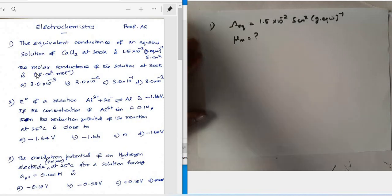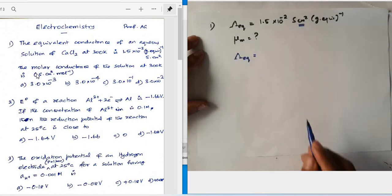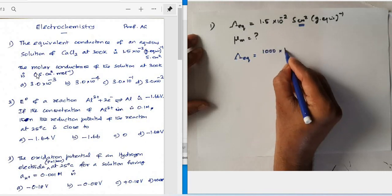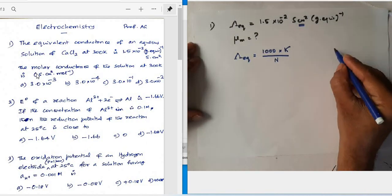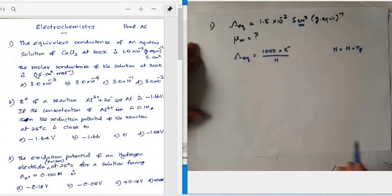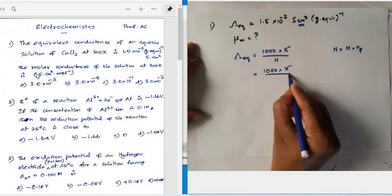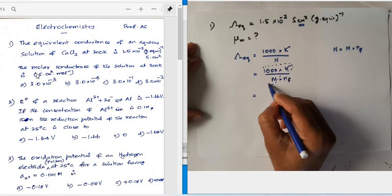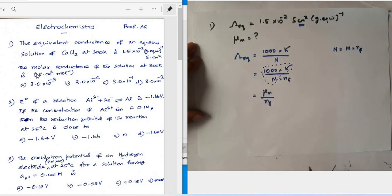To identify the molar conductance, we use the formula: equivalent conductance equals 1000 × kappa divided by normality of the solution. We also know that normality equals molarity × n-factor. Replacing normality gives: equivalent conductance = 1000 × kappa / (molarity × n-factor), and 1000 × kappa / molarity is nothing but molar conductance.